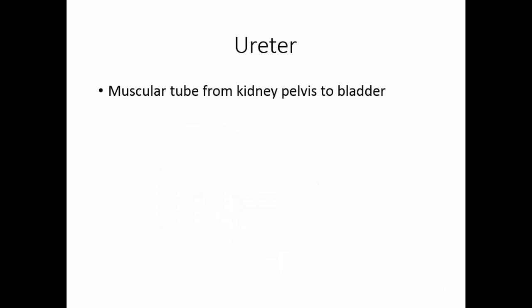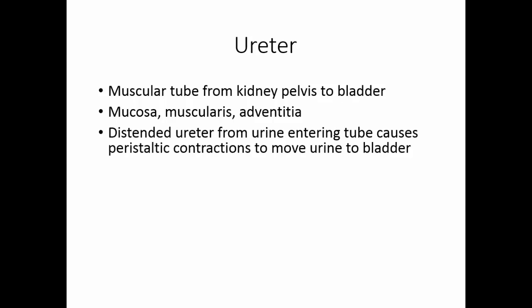The ureter is a muscular tube from the pelvis of the kidney to the urinary bladder. It has three layers: a mucosa of epithelial mucosal cells, a muscularis of circular smooth muscle, and an adventitia of connective tissue that anchors the ureter to the abdominal wall. Whenever urine from the kidney flows into the ureter, it causes the ureter to be distended, which stimulates peristaltic contractions that push the urine to the urinary bladder. So this is not a gravity drainage system — it is a pushing system.